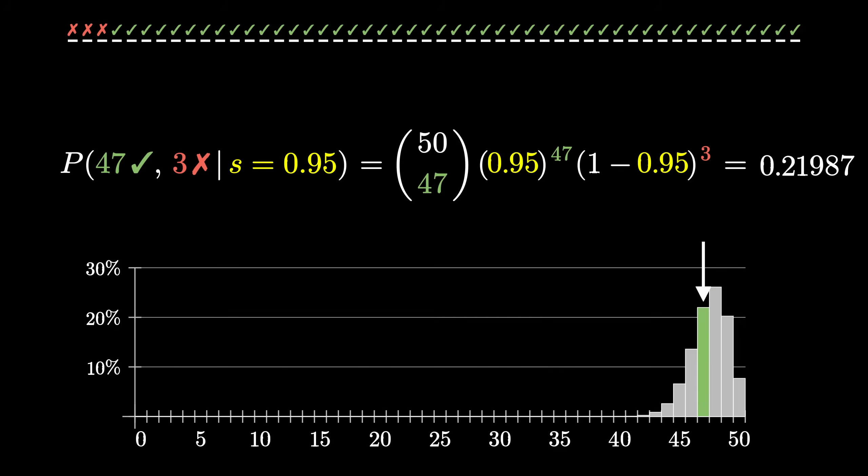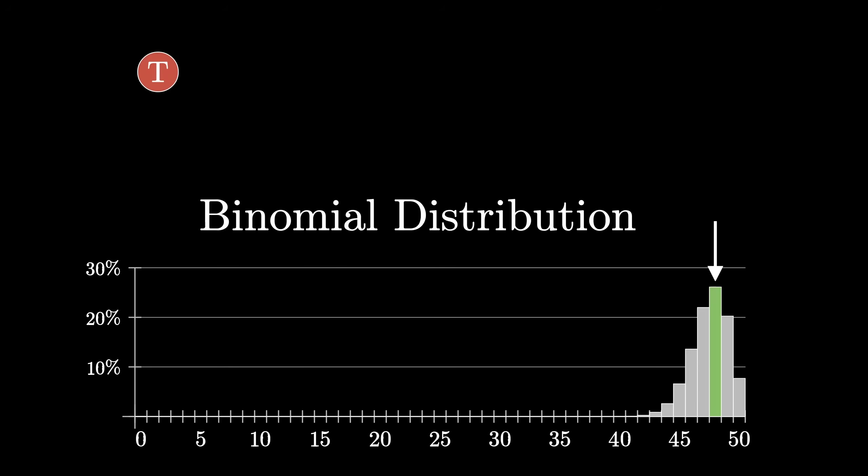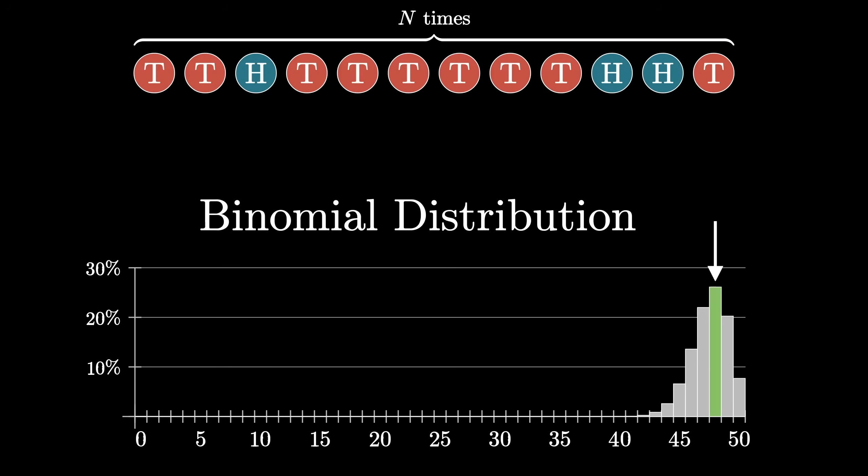You could also replace this 48 with some other value and compute the probability of seeing any other number of positive reviews. Again, assuming a given success rate. What you're looking at right now, by the way, is known in the business as a binomial distribution, one of the most fundamental distributions in probability. It comes up whenever you have something like a coin flip, a random event that can go one of two ways, and you repeat it some number of times. And what you want to know is the probability of getting various different totals.